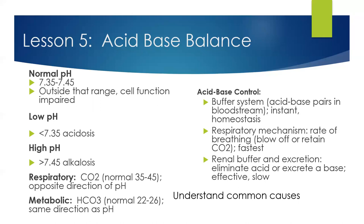Understanding common causes is also really important. Metabolic acidosis is often caused by excessive diarrhea, whereas respiratory alkalosis can be caused by conditions that lead to breathing excessively fast, such as anxiety or panic attacks. Just know your normal pH and know what your normal HCO3 is.